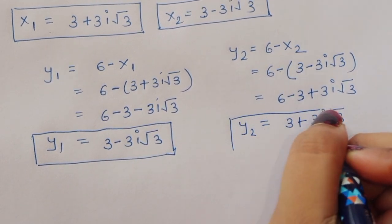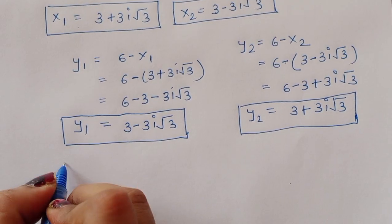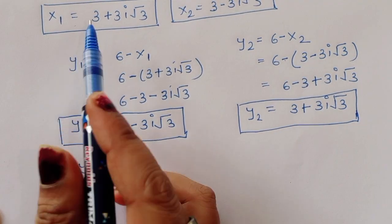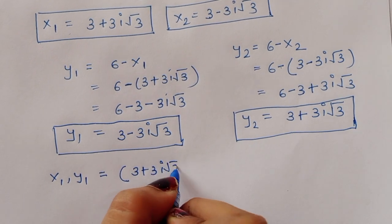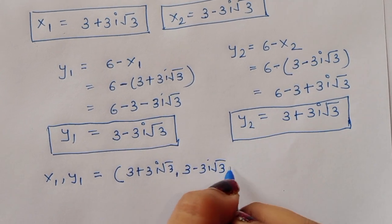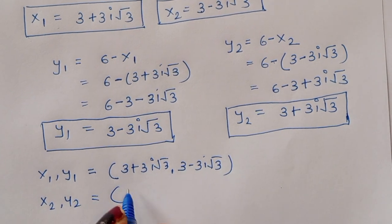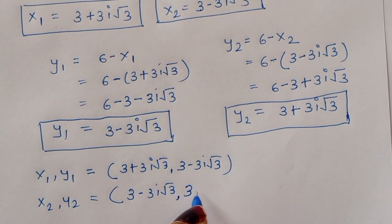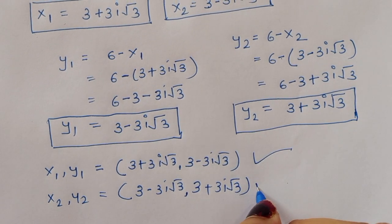So we have both solution pairs: x1 equals 3 plus 3i square root of 3 with y1 equals 3 minus 3i square root of 3, and x2 equals 3 minus 3i square root of 3 with y2 equals 3 plus 3i square root of 3. This is the complete solution. Thank you.